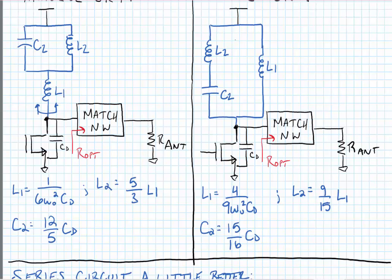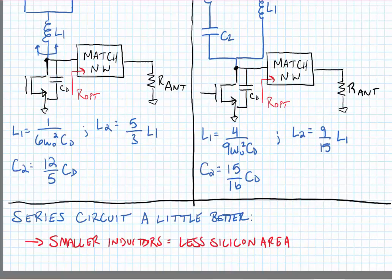Now if we evaluate which one of these is better, we typically have to choose a condition based upon the type of circuit that we're designing in. For an integrated circuit we might say that the series circuit is a little bit better because the inductors have smaller component values and this would result in less silicon area used. An added benefit of using smaller inductors is that they often also have lower loss.